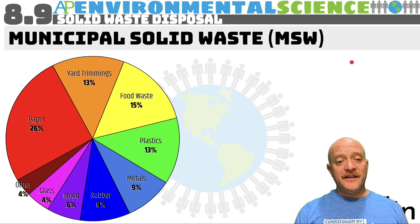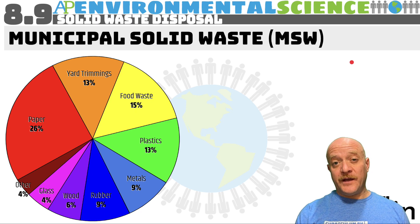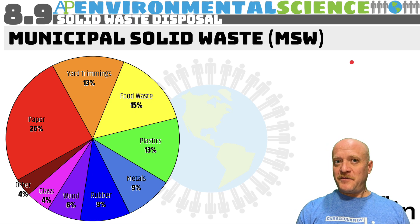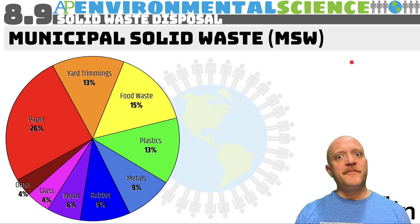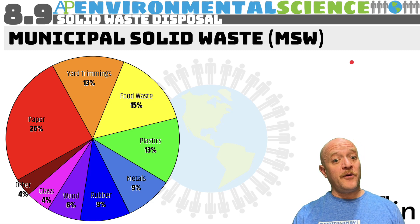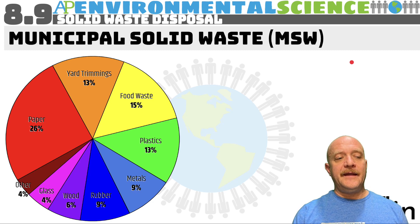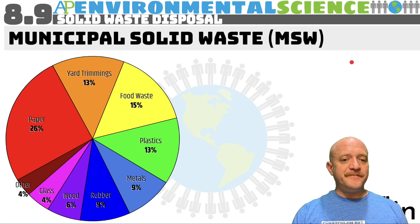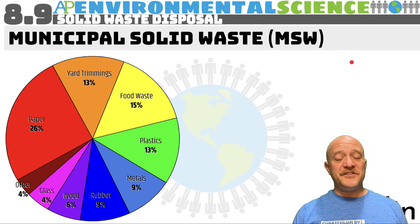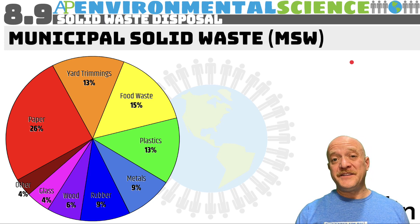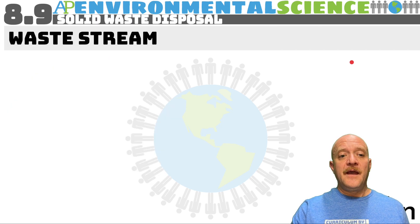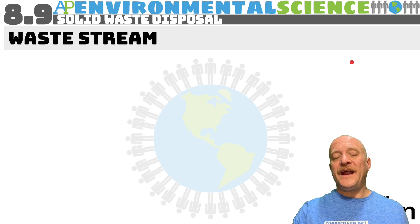The top three categories of MSW are paper, yard trimmings, and food waste. Plastics are also up there. Just remember plastics originally came from fossil fuels — from petroleum. You don't really have to know all of the breakdowns, just know that paper has the most, followed by yard trimmings and food waste.